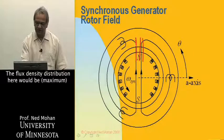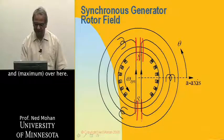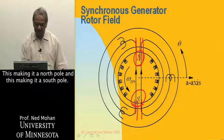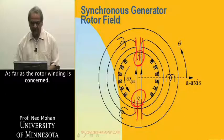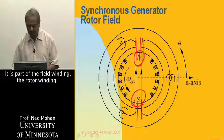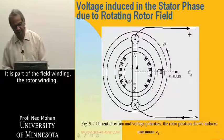darts mean the currents coming out, the flux density distribution here would be maximum and maximum over here, this making it a north pole and this making it a south pole as far as the rotor winding is concerned. So this is called the rotor winding. So this is called the field winding, the rotor winding.